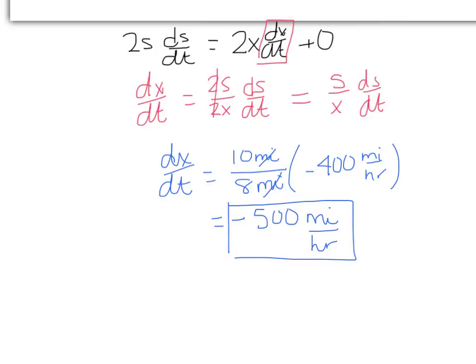So I ended up with a negative 500 miles per hour, which is a velocity. If I want the actual speed, I have to take the absolute value of that. So my speed is really equal to 500 miles per hour. This here is the final answer.